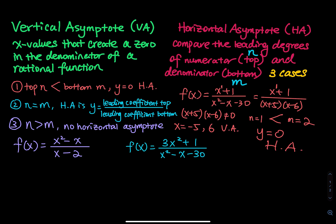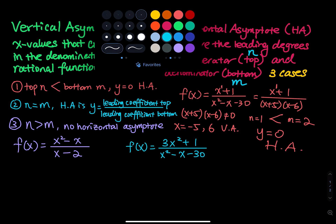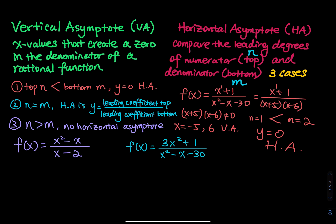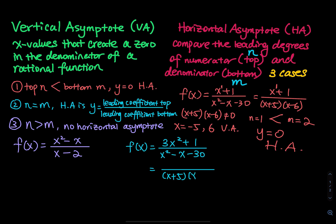Case 2 is when the leading degree of the numerator is equal to the leading degree of the denominator. Then the horizontal asymptote is y equals the leading coefficient of the numerator divided by the leading coefficient of the denominator. For this case, I'll factor the denominator first: x plus 5 times x minus 6.